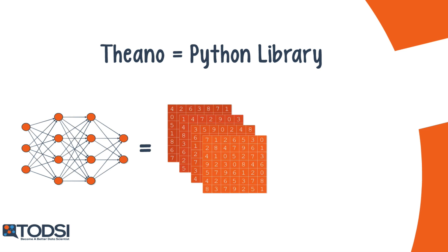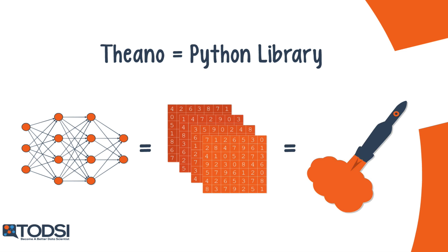This is extremely important since computers can perform matrix operations very quickly, especially when you use a library like Theano to process multiple matrix values in parallel. So if you build a neural net with this underlying structure, you could potentially use just a single machine with a GPU to train enormous nets in a reasonable time window.